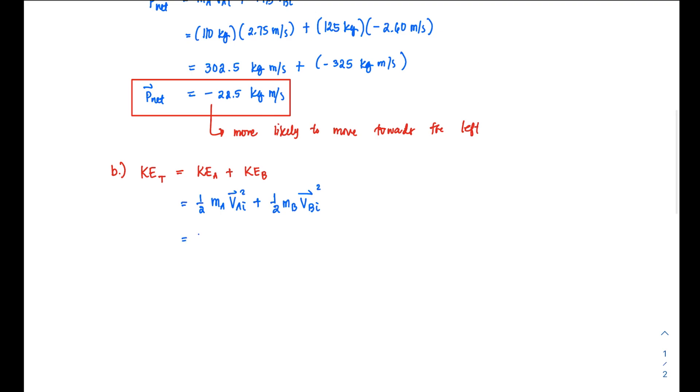factor out the common term—only 1/2 is common in this case—so (1/2)[m_A(v_A,i)² + m_B(v_B,i)²]. From there,